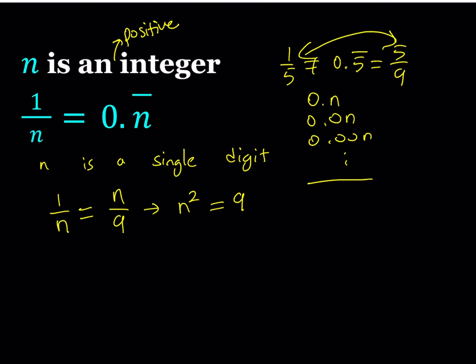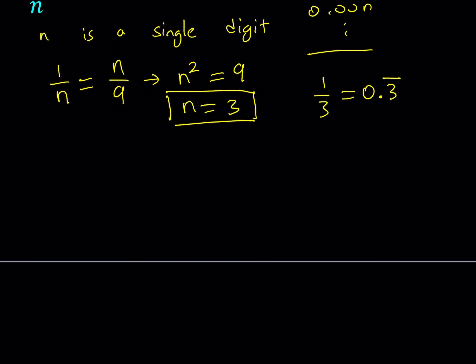Because I know some folks are going to be unhappy why you didn't say n is positive. Anyways, n is going to be 3 from here. So if n is a single digit, n equals 3 obviously satisfies this. We know that it's very common 1 third is the same as 0.3 repeating. We should all know that I think.